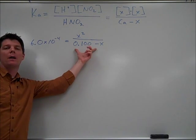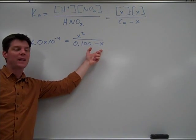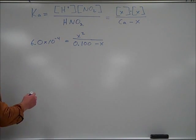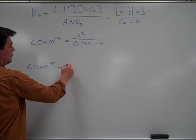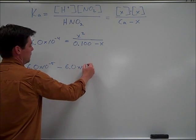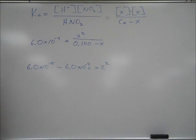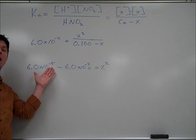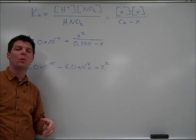My next step is to multiply by 0.100 subtract x on both sides of the equation. Now what this will produce is 6.0 times 10 to the minus 5 minus 6.0 times 10 to the minus 4x is equal to x squared.